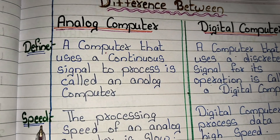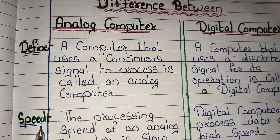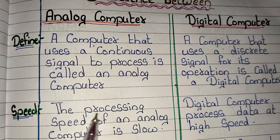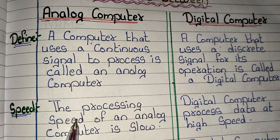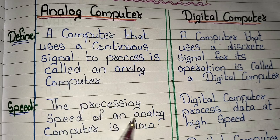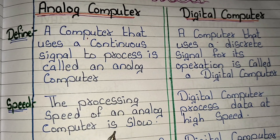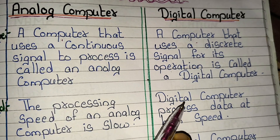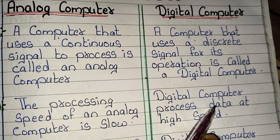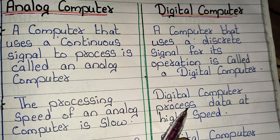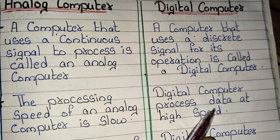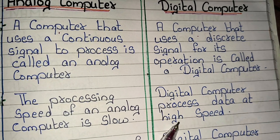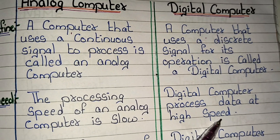Second point: speed. The processing speed of an analog computer is slow. A digital computer processes data at high speed.